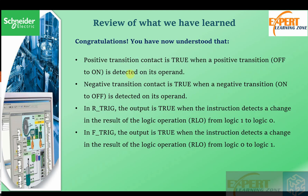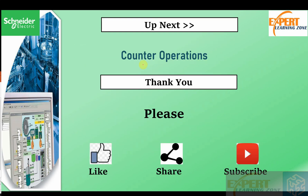Let's review what we have learned. The positive transition contact is true when a positive transition off-to-on is detected on its operand. For the rising edge trigger, the output is true when the instruction detects a change in the logic result from zero to one. For the falling edge trigger, the output is true when the instruction detects a change in the logic result from one to zero.